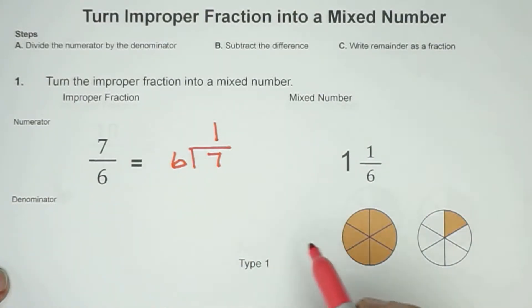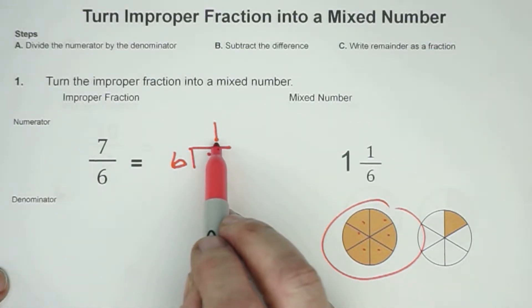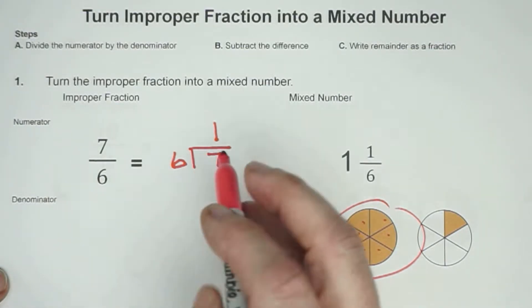6 will go into 7 one time. And I'll show that to you right here. Here you can see that we have our 7/6. 1, 2, 3, 4, 5, 6, 7. All of those are sixths. And if I ask for one group of 6, see how I'm circling only 1? That's the 1. So then we're going to go 1 times 6.